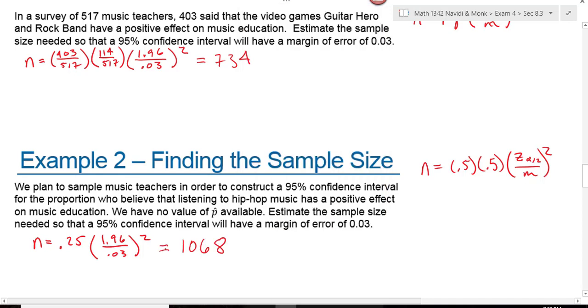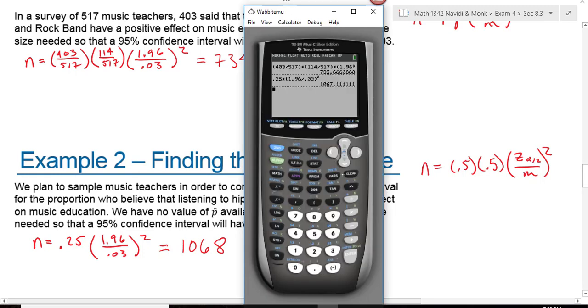You have to round up to the next whole number. Yes, even if it's 0.01 you have to round up. When you're finding a sample size, anytime you're finding a sample size, you have to round up to the next whole number. So even though this was 1067.1111, we rounded it up to 1,068.